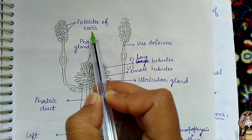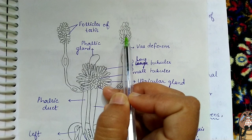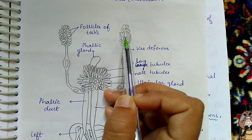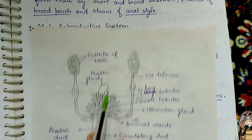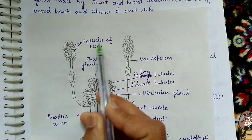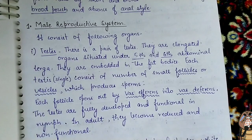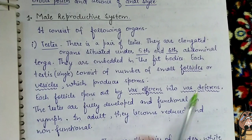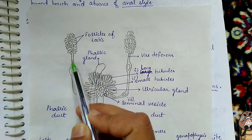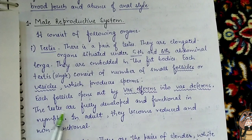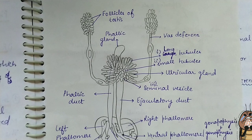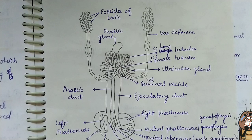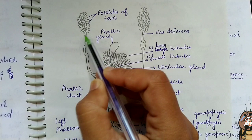There is a pair of testes, which are elongated organs present in the 5th and 6th abdominal terga. They are embedded in the fat bodies. Each testis is made up of a number of follicles or vesicles which produce sperm. Each follicle opens out by a vas efferens into the vas deferens. The testes are fully developed and functional in the nymph stage, but become reduced and non-functional in the adult.